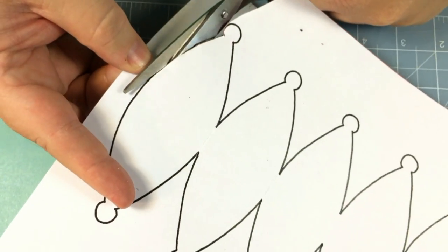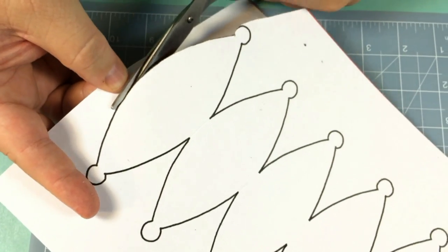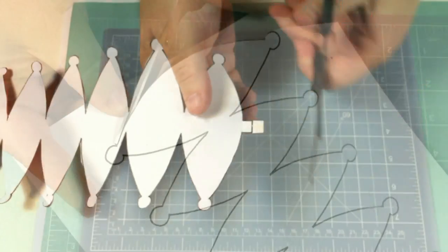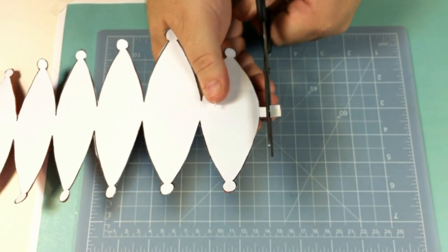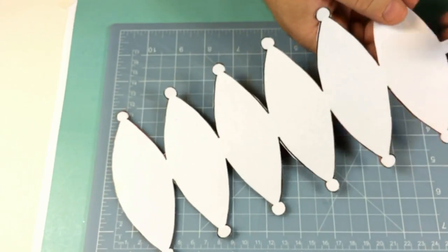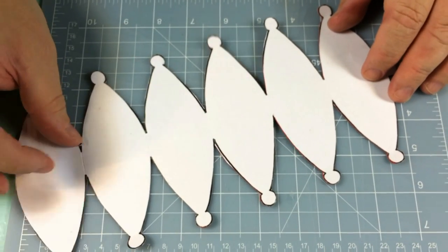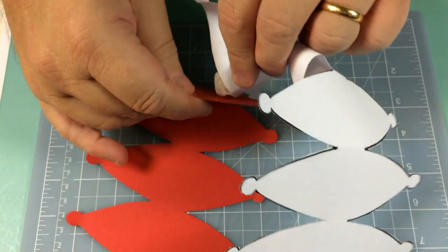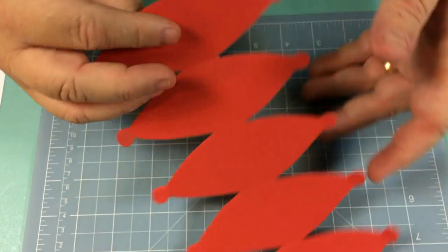So all I'm going to do now is just cut around the whole of the template. So now you can see there's the template cut out and you can just remove this and then that you can use again if you wish. Now you've got this.